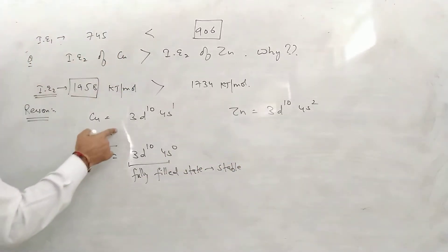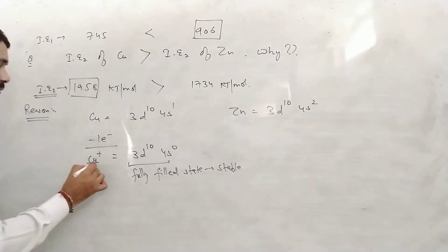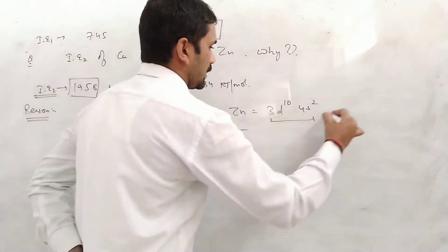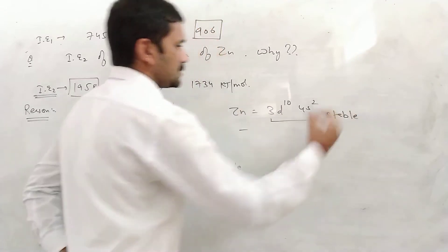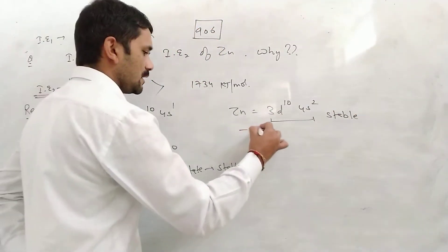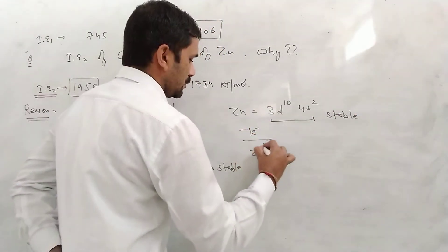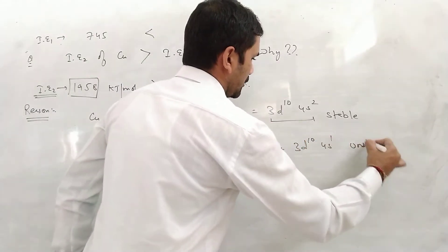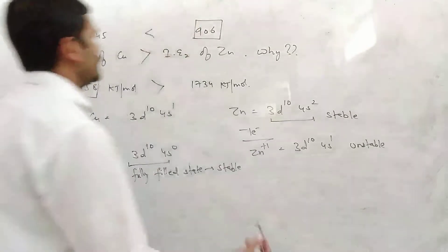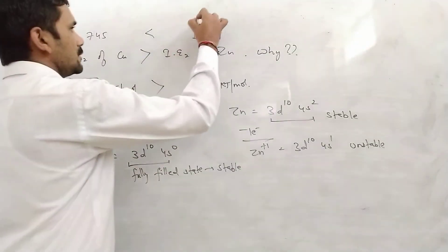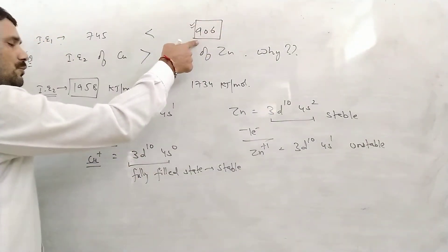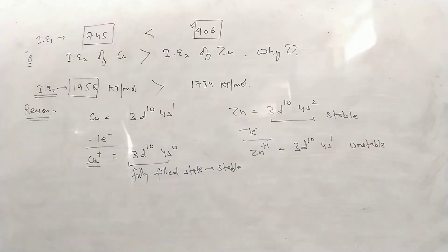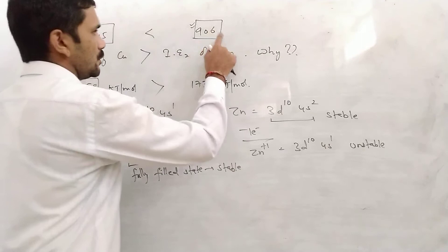Copper, after losing one electron, attains a stable electronic configuration 3d10. Because this is a fully filled d-orbital state, it is very stable. So for the second ionization of copper, you are removing an electron from this stable state and making it unstable, which requires a very high amount of energy.